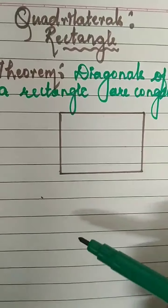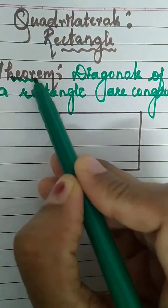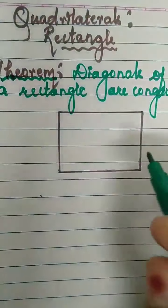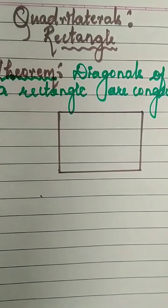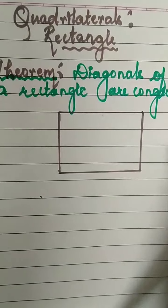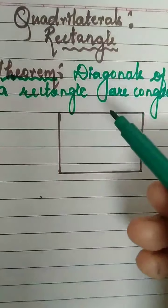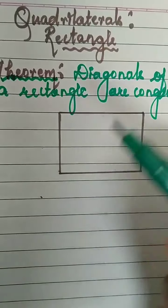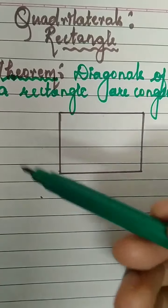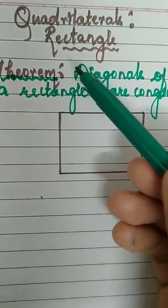Today in this video, let us discuss the theorem in detail. In 9th standard, we started with the theorems. In the previous class, you are very much thorough with how a theorem goes and what all things are included in a theorem. The properties that you learnt in the previous video — out of those properties, few properties we are going to prove in a theorem.